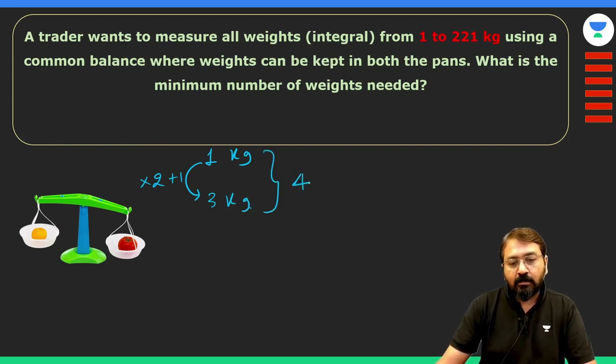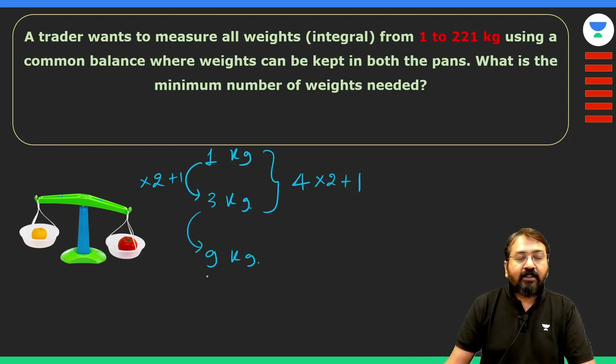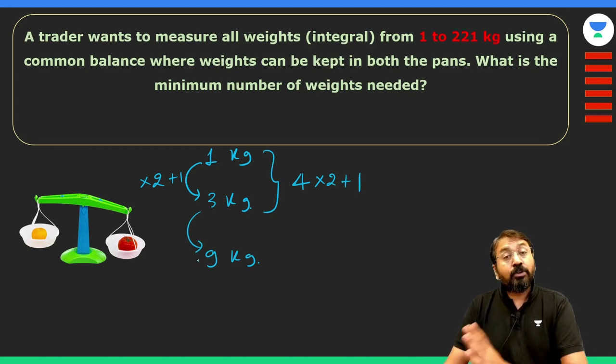So we can once again make double of 4 and add 1 to that. The next weight should be of 9 kg. Now using 1, 3, and 9, we can measure all the weights up to 13 kg.